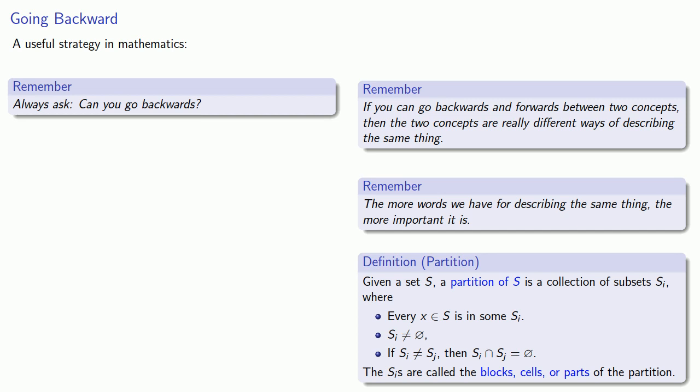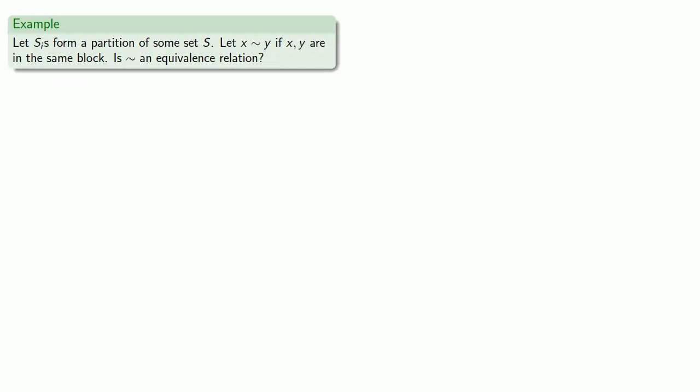In this case, an equivalence relation squiggle gives us a partition. Could a partition give us an equivalence relation? So let's take a partition of some set, and let's define a relation. And the obvious relation we might try to define here is that x squiggle y if x and y are in the same block. Is this an equivalence relation?